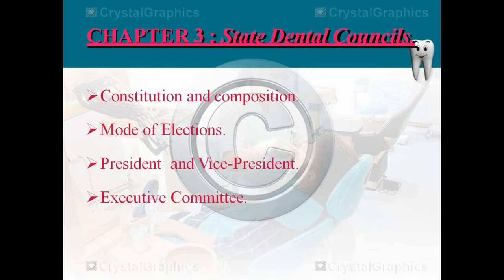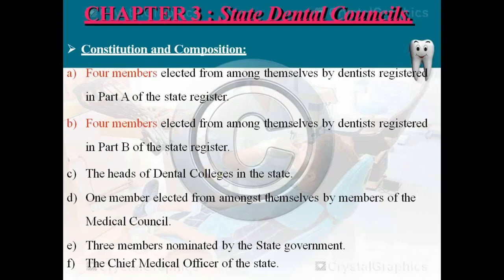Chapter three is about the State Dental Council. There is only one Dental Council of India, but each state has one State Dental Council where every dentist of that state registers. Regarding composition and mode of election: four members are selected from Part A of the state dental register, and four members from Part B. Part B refers to dentists who were practicing in India before independence, or before the Dentist Act came into existence in 1948/1949.